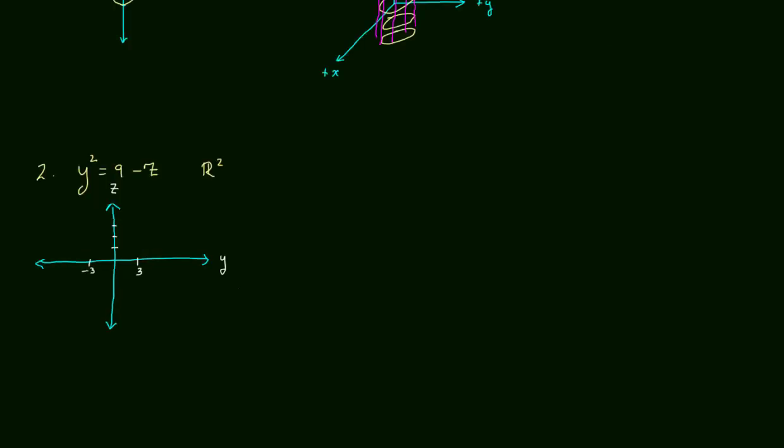Now we're going to graph the second equation in R2, and that first shape is just a good old-fashioned parabola facing down. Notice I've drawn the y and the z-axis with the z-intercept of 3, 6, 9. Let's take a look at it in R3.